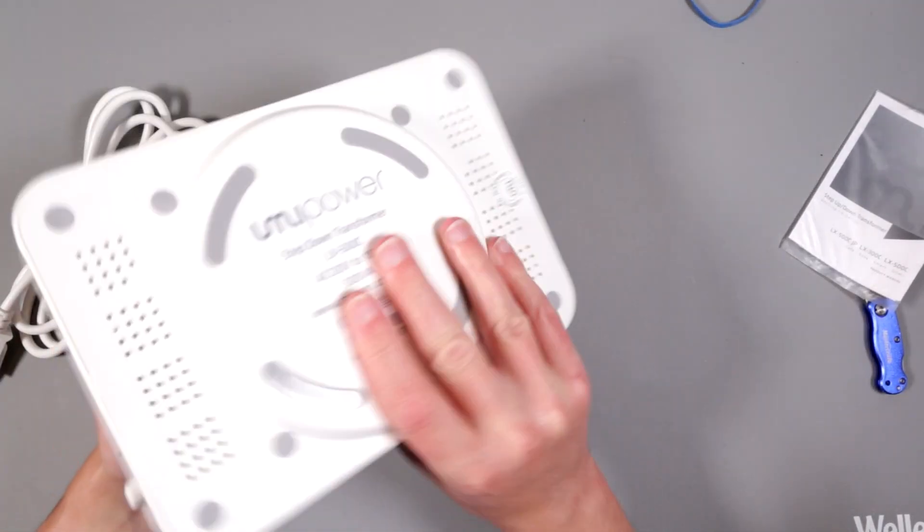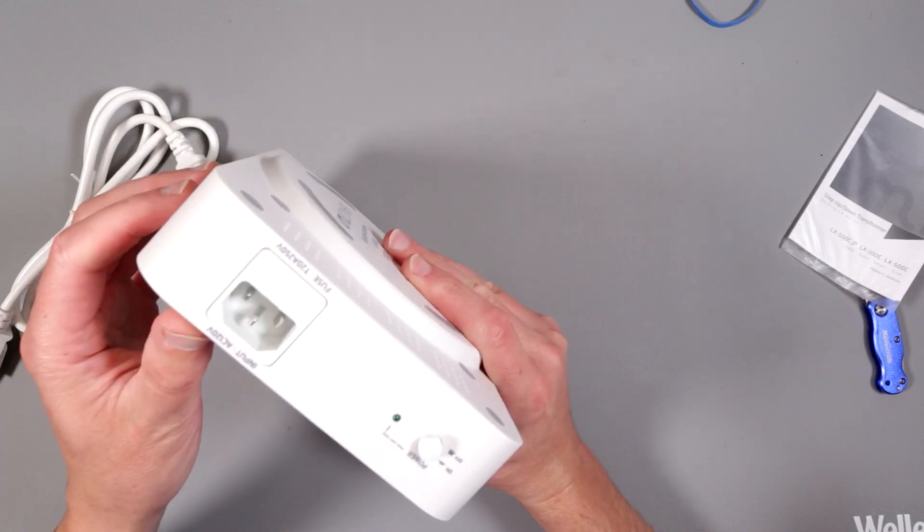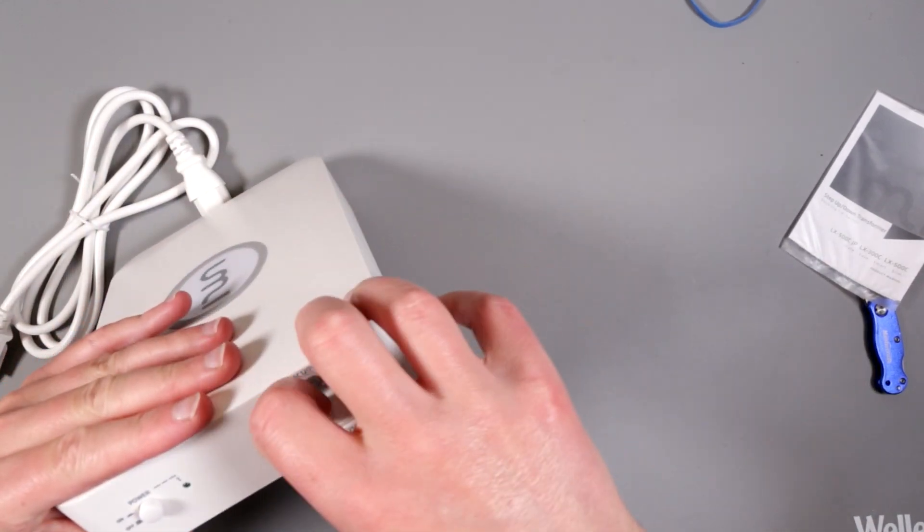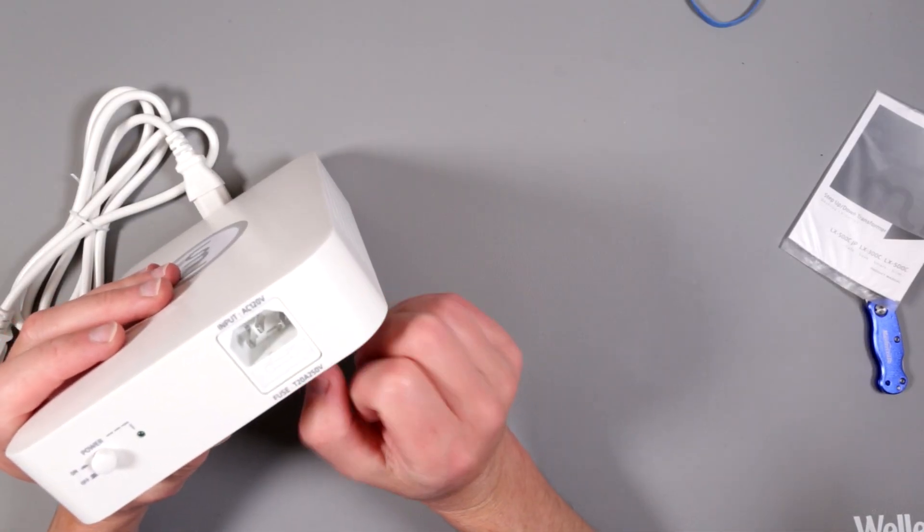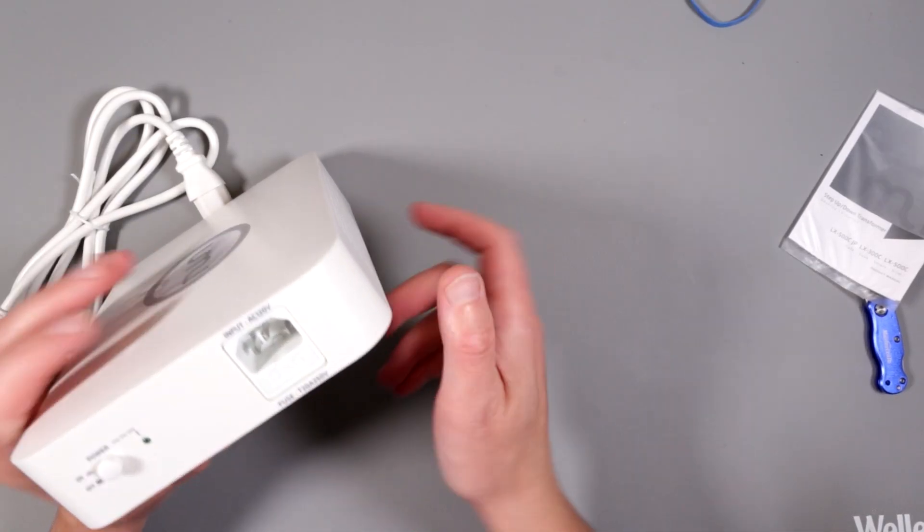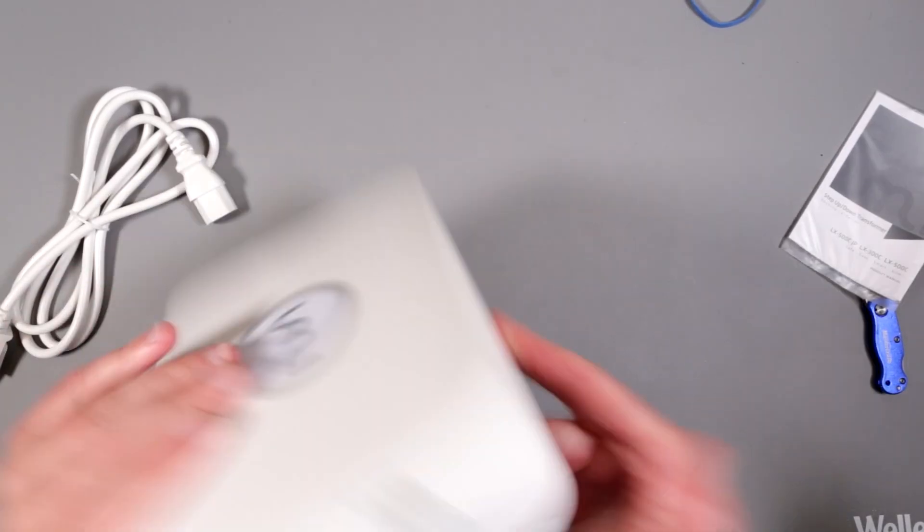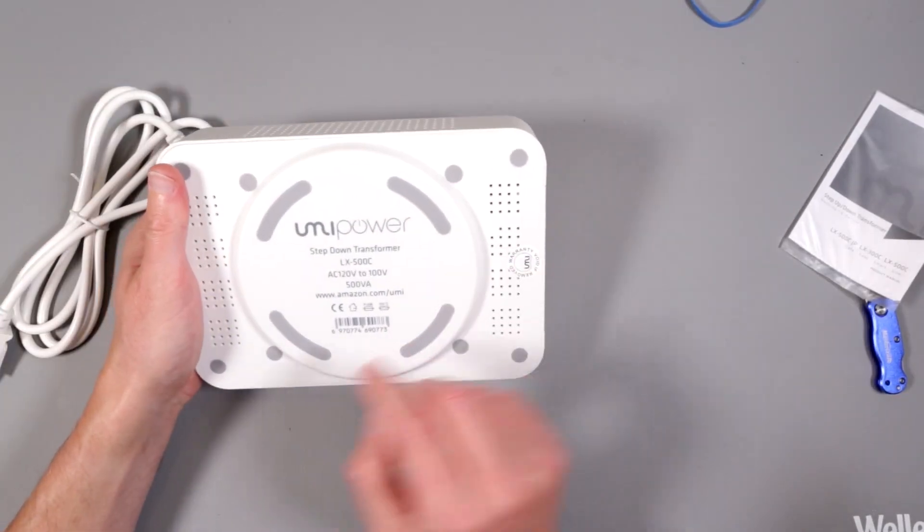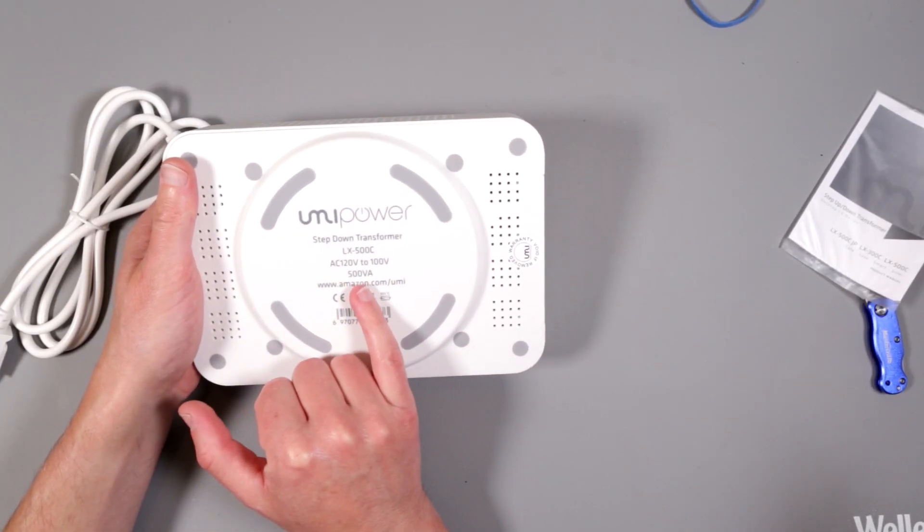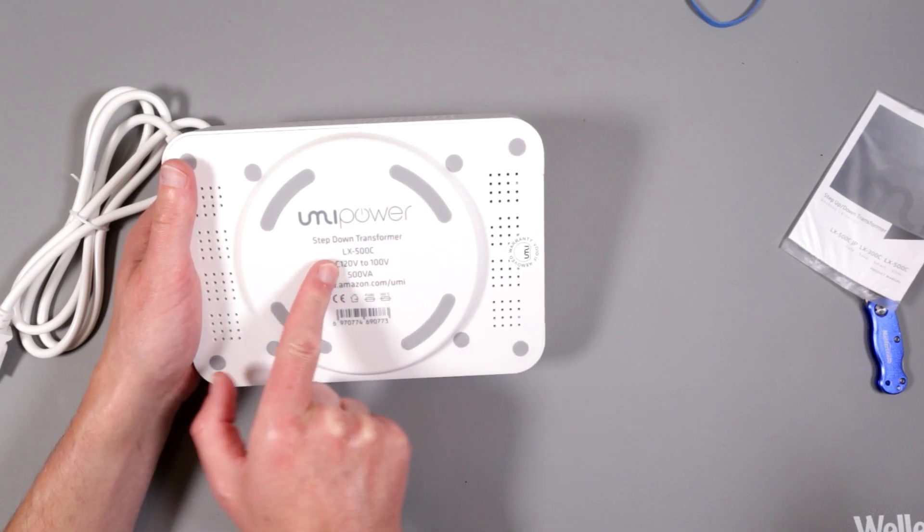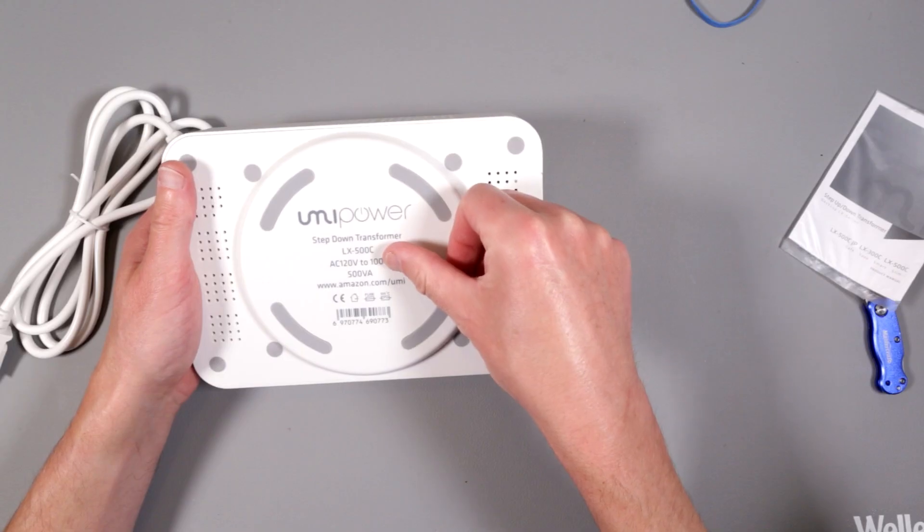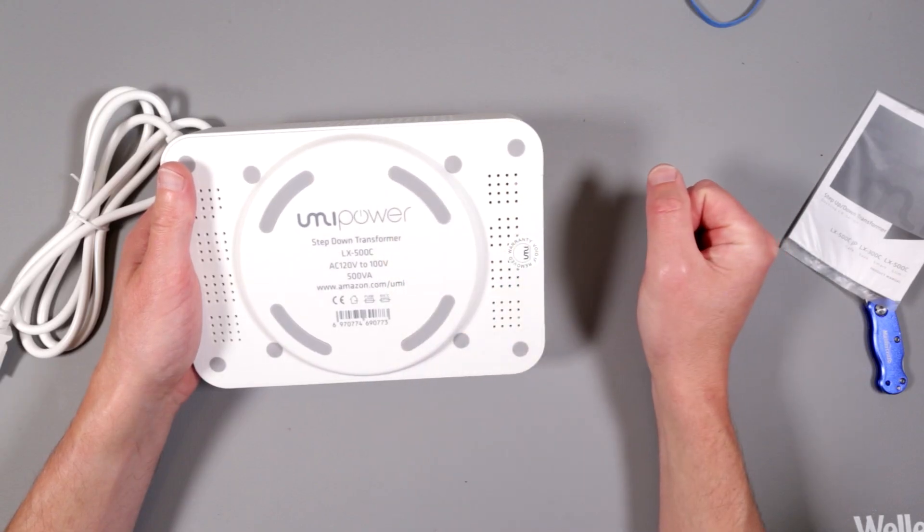So you're gonna take our North American 110 volts, 120 volts I mean, and make them 100 volts. Because some of the devices may not like it. There is a button here. It looks like it's just a regular clunky switch. This thing has a fuse. But the fuse is like two, this is more like a safety fuse, not a 500 watt limiting fuse.